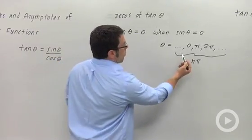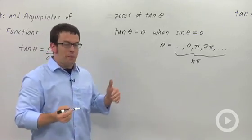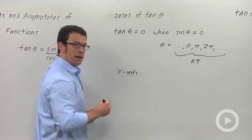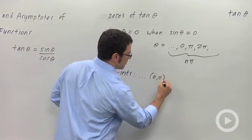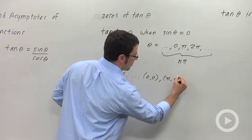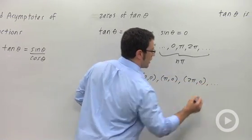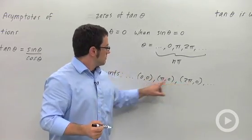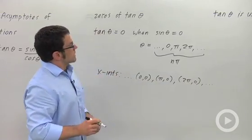Now what does this have to do with x-intercepts? Well the zeros become x-intercepts when you graph. So the x-intercepts would be (0,0), (π,0), (2π,0), and so on. These are the zeros of tangent. And of course the second coordinate of an x-intercept is going to be zero. Those are the x-intercepts.